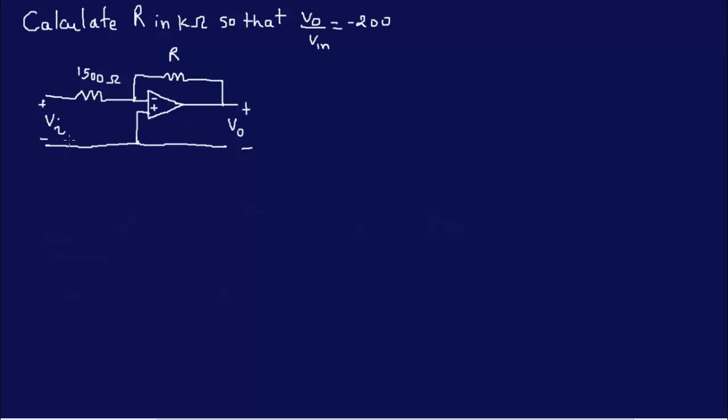Now we can do KCL over here at this node. We can assign a current here, let's call that i1, and there's no current that will flow through here so the other current will come out, let's call that i2. If we apply KCL then we have i1 is equal to i2.